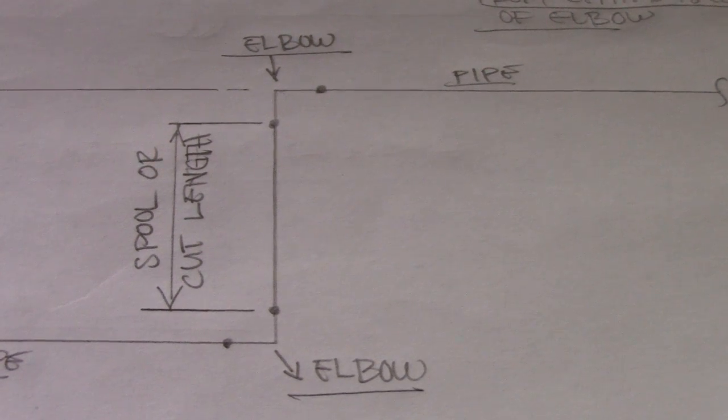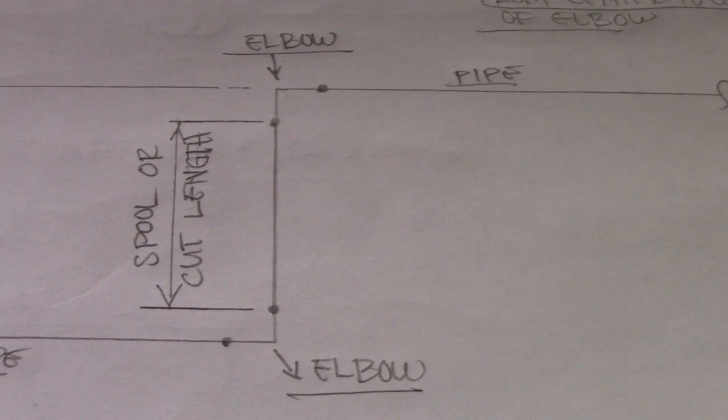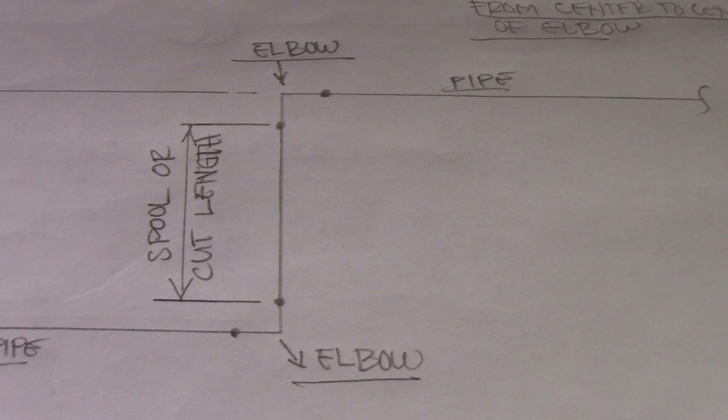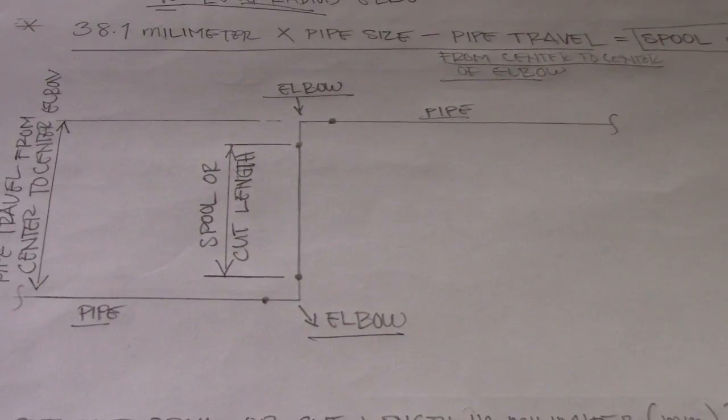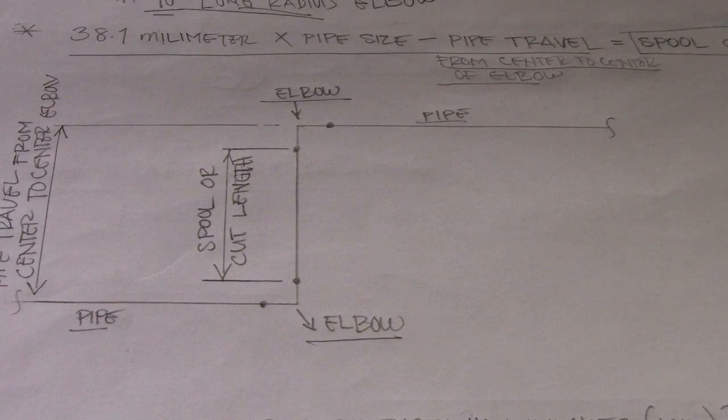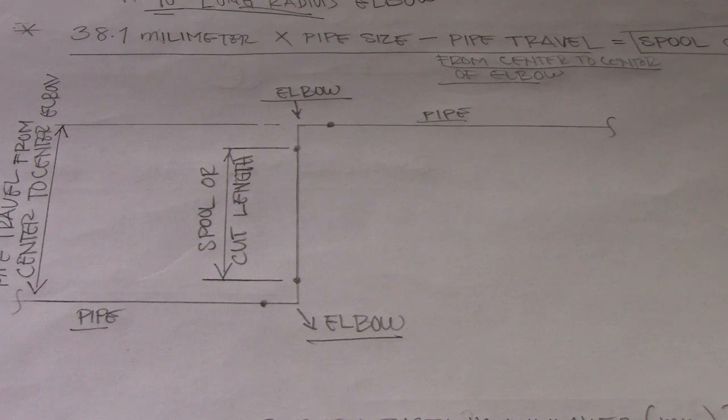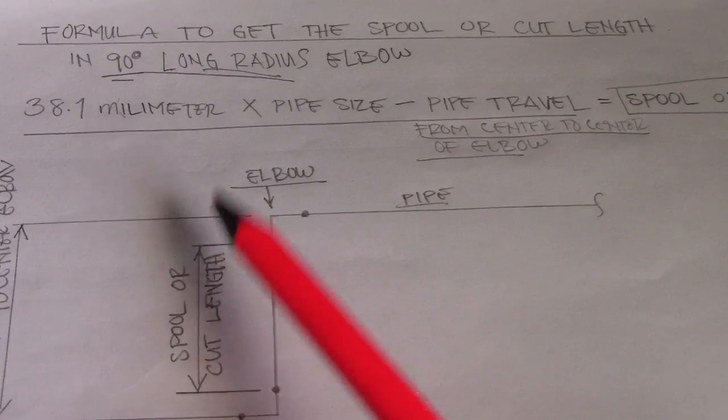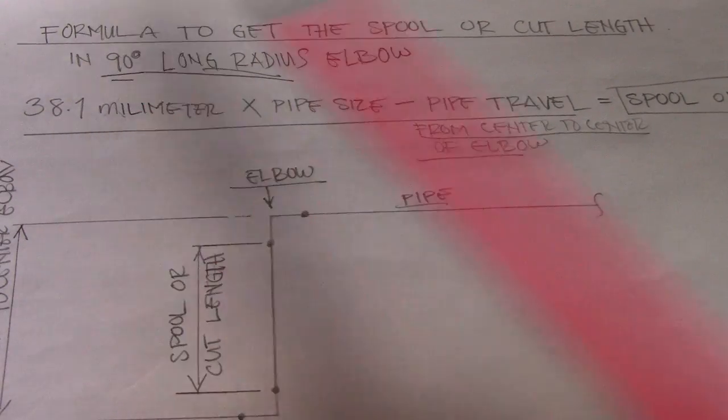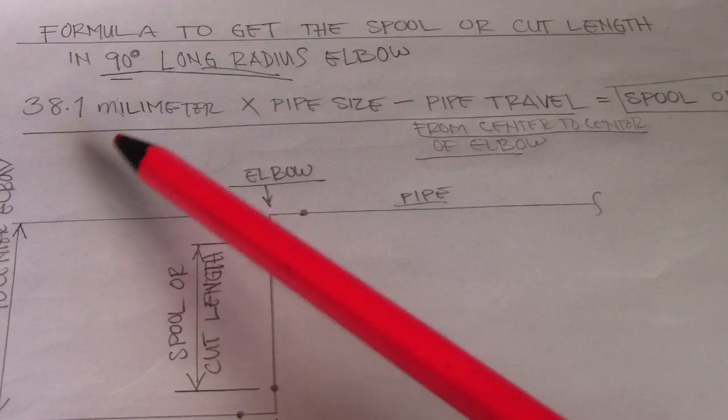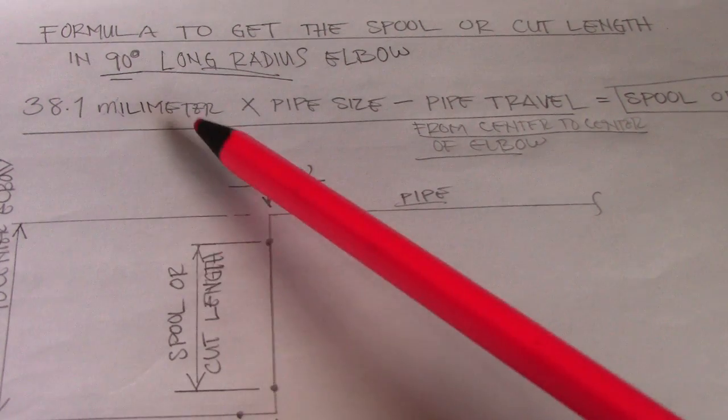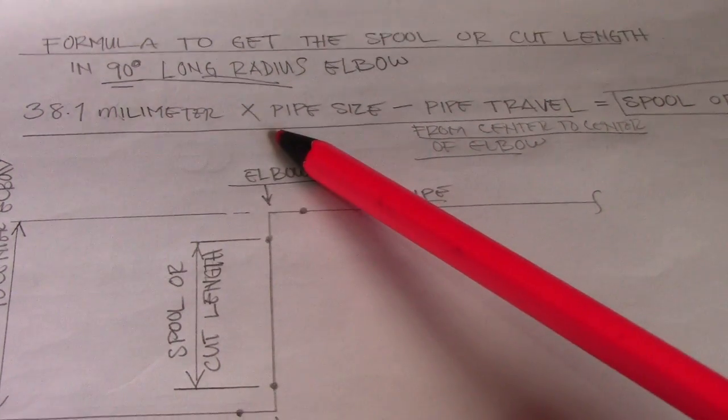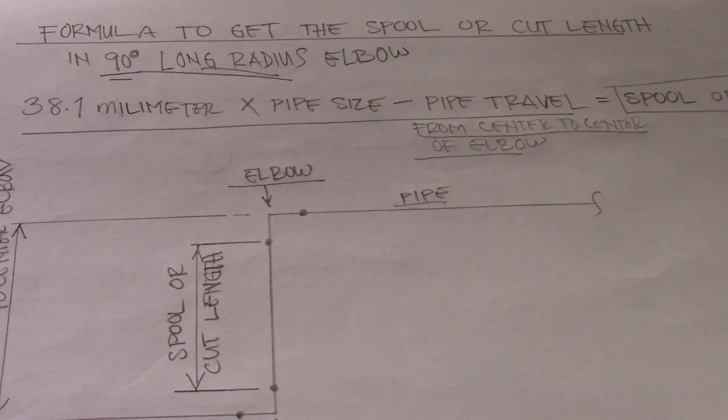This is our spool cut length. This is a very easy way to find the spool. So first you get the take off of the elbow and multiply it. This is 38.1, this is for 90 degrees long radius.